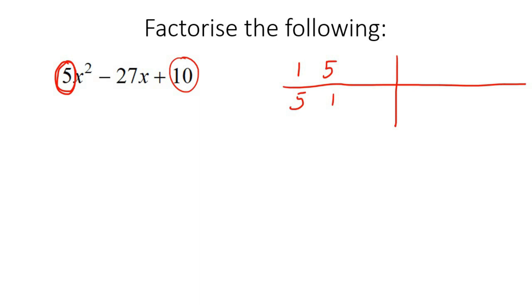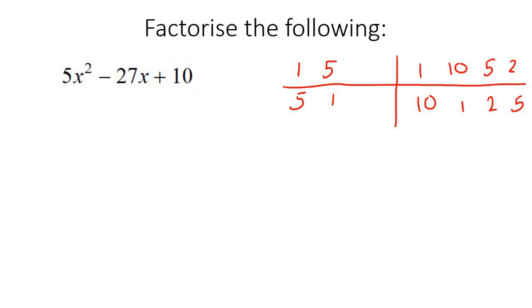Then here's 10. So we would say 1 times 10, 10 times 1. But that can also be written as 5 times 2, and then you must also say 2 times 5. So that's step 1.